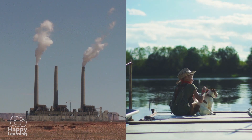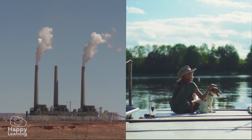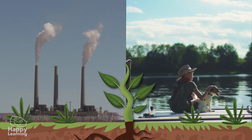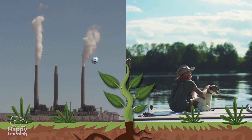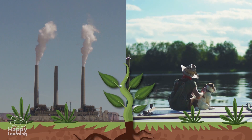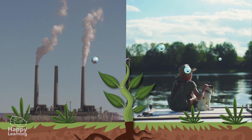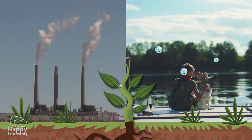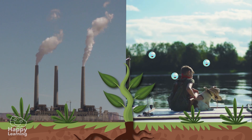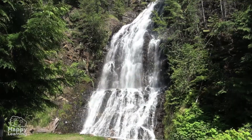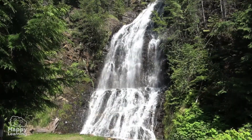And one last thing, so you understand the importance of photosynthesis: when plants absorb dirty and contaminated gases, they transform them into pure air, into oxygen. And this way, they clean the atmosphere and all of nature.